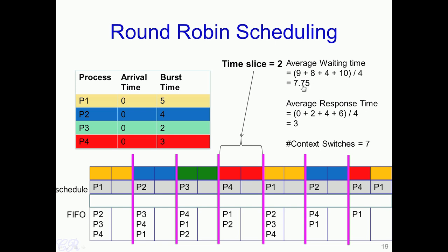The average response time is computed differently from waiting time. Response time is the time from when the process enters the ready queue to when it begins executing. P1 has a response time of 0 since it executes immediately. P2 enters at cycle 0 but executes only after 2 cycles, so response time is 2. P3 enters at 0 but executes only after 4 cycles, giving response time 4. P4 has a response time of 6. Therefore the average response time is 3. The number of context switches that occur is 7.